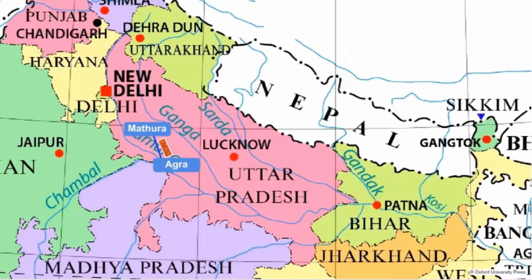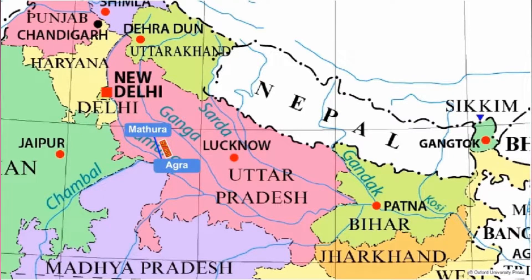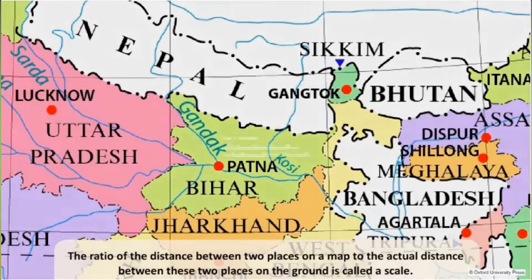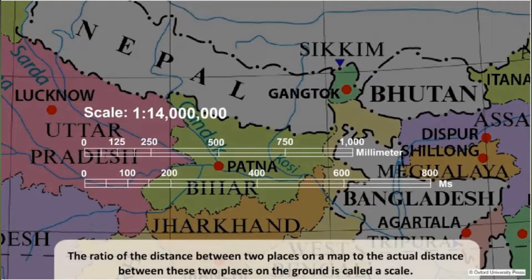Mathura and Agra by road is about 57 kilometers. It is not possible to make a 57 kilometer long map to show the route and places situated between these two cities. Hence, a map is drawn to scale.